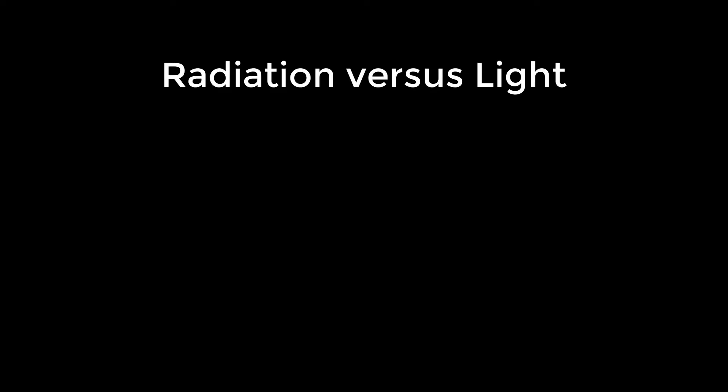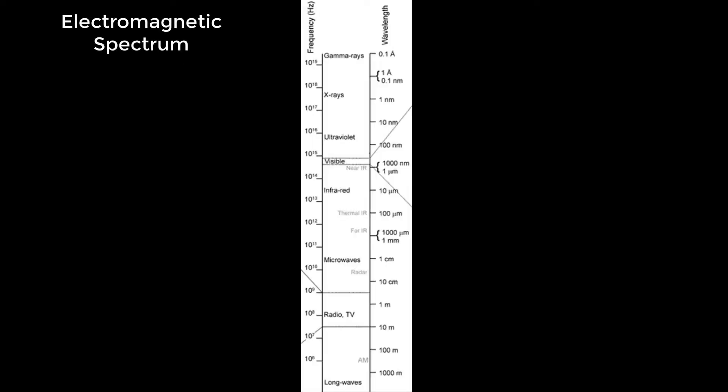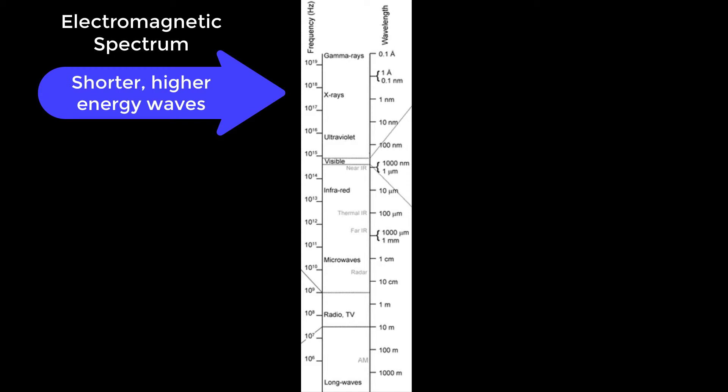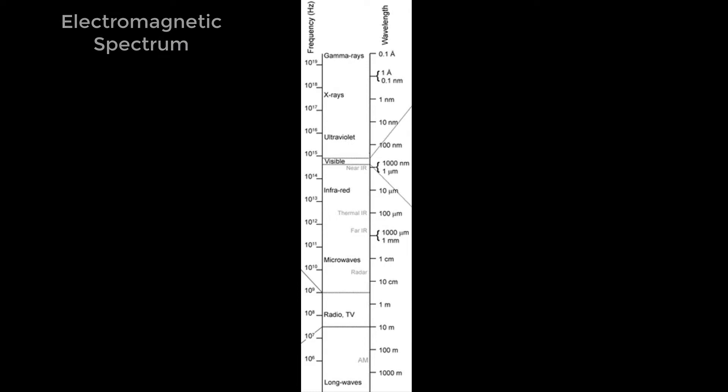Let's start by talking about the difference between radiation waves and light waves, as there are sensors that can measure both. Beginning with the electromagnetic spectrum: at the top we have shorter, higher energy waves, for example x-rays and gamma rays. At the bottom we have longer, lower energy waves — for example, radio and television waves exist in that region. What we're interested in is this area here, where the solar energy from the sun is, and here you can see a solar irradiance curve.